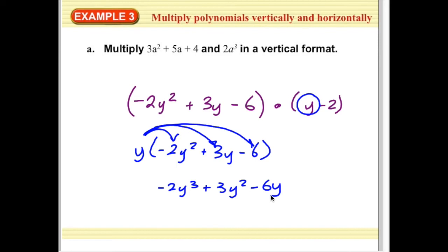Then I'm going to multiply by my negative 2. Negative 2 times negative 2y squared plus 3y minus 6 is going to be 4y squared plus 6, sorry, minus 6y plus 12.